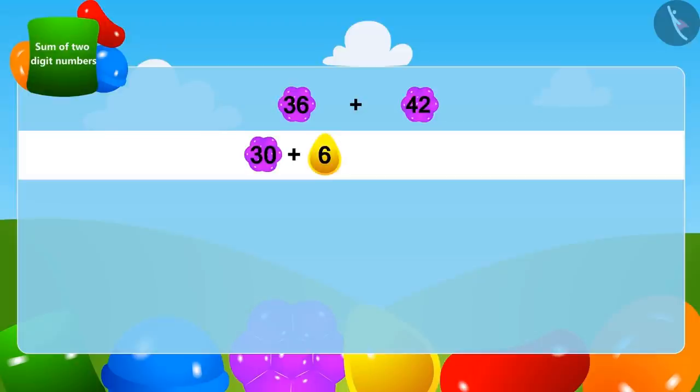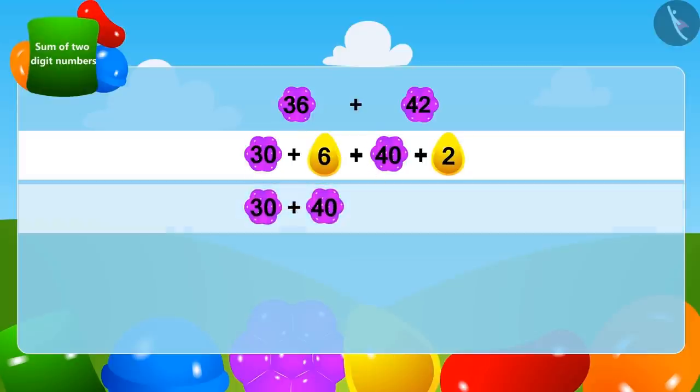In the same way, we can write 42 as 40 plus 2. Now we write the two-digit numbers together and add them: 30 plus 40 equals 70.